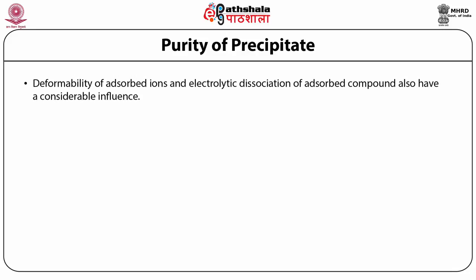Silver chloride adsorbs silver acetate much more strongly than silver nitrate under comparable conditions, since the former is less soluble. The deformability of the adsorbed ions and the electrolytic dissociation of the adsorbed compound also have a considerable influence. The smaller the dissociation of the compound, the greater is the adsorption. Thus, hydrogen sulfide, a weak electrolyte, is strongly adsorbed by metallic sulfide.